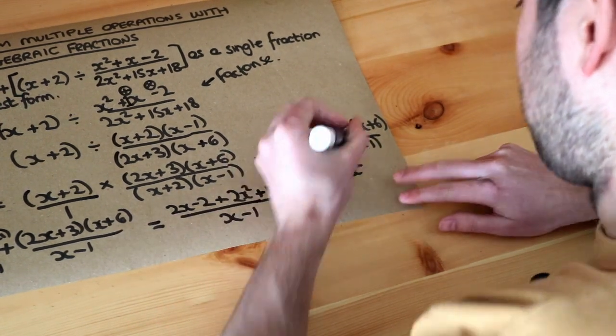And if we just simplify that, we've got the 2x squared. We've got 2x plus 15x, which is 17x. And then we've got the 18 minus 2, which is plus 16, all over x minus 1.